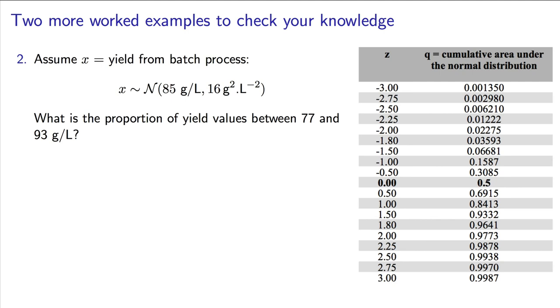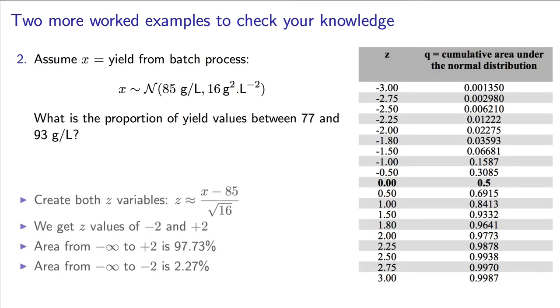Here's another one to try without a calculator. Historically, we've observed the yield values from our batch process to be 85 grams per liter, with a variance of 16 units squared. What is the probability of yield values between 77 and 93 grams per liter? You should have found the standardized z values for 77 and 93, respectively, relative to a mean of 85 grams per liter and a variance of 16 units squared. These z values are minus 2 and plus 2, respectively.